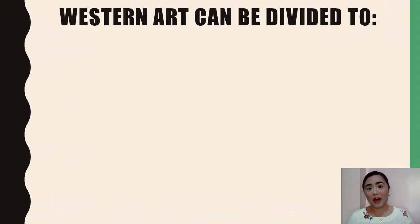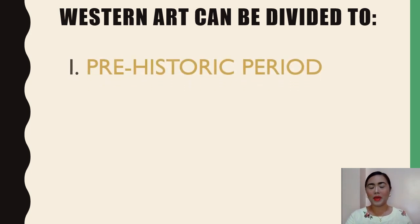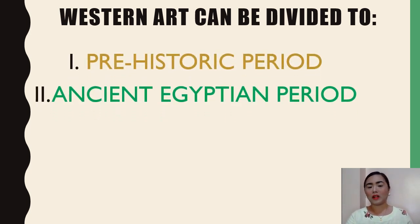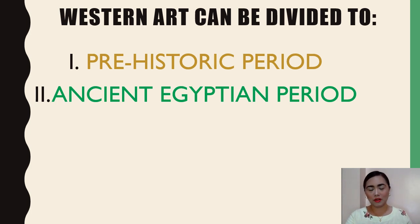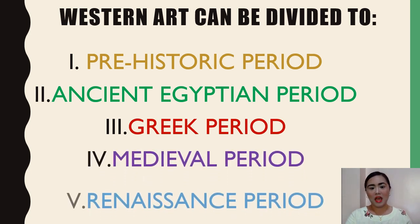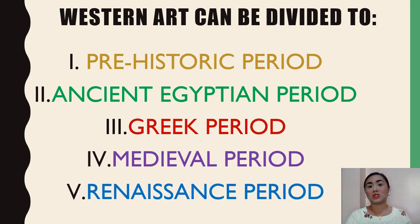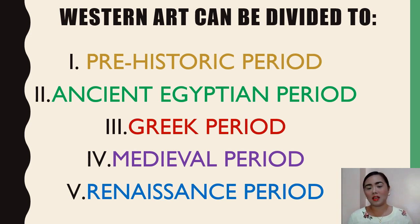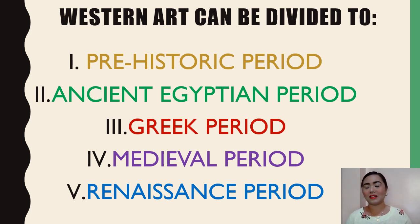Western Art can be divided into five great periods: the prehistoric period, the ancient Egyptian period, the Greek period, the medieval period, and the Renaissance period — which is considered the golden age of Western European art. To make our discussion easier, for every period I will be giving concrete examples of art pieces so that you will have an idea of the artistic styles present during that period.